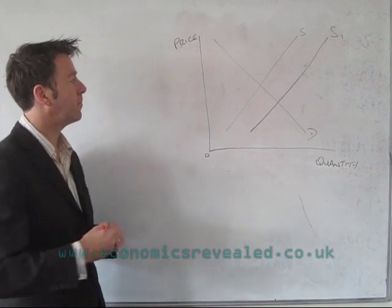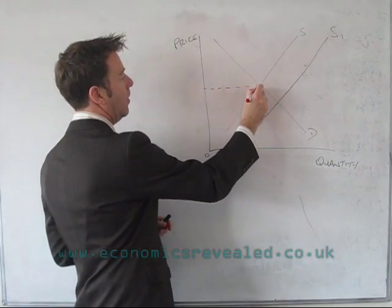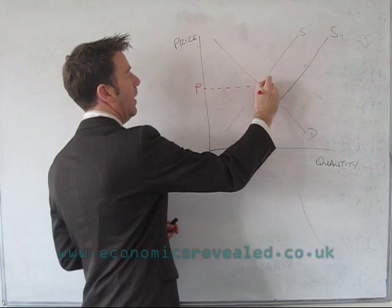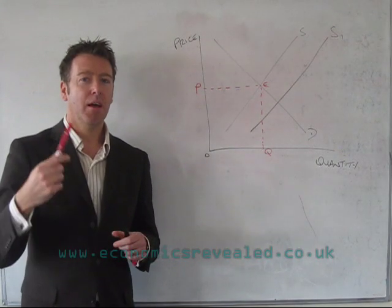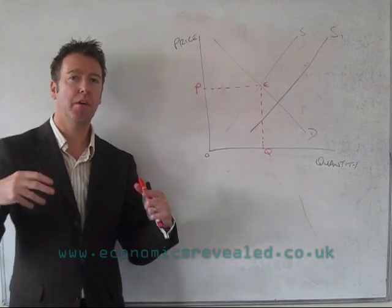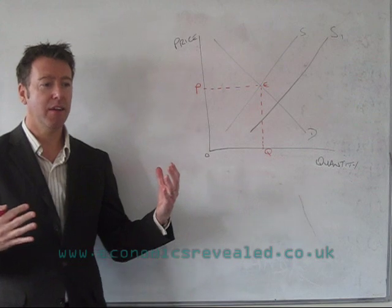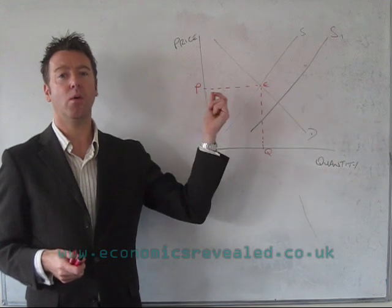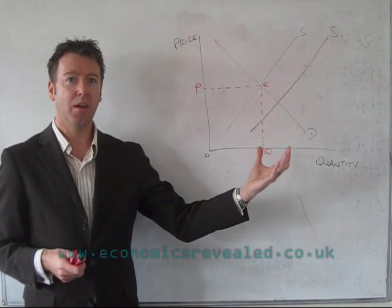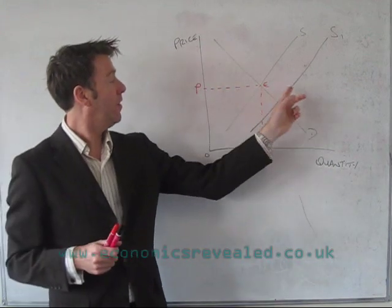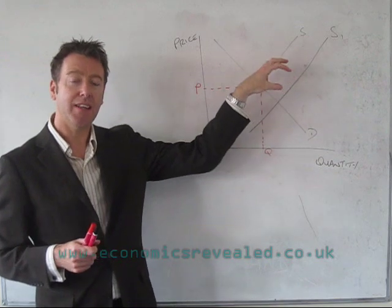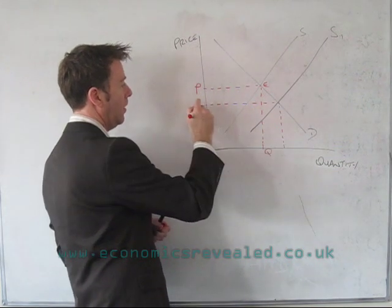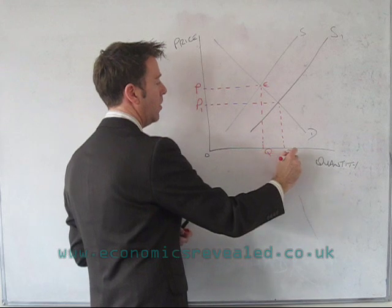So in that situation on this diagram, the original price was price P and quantity Q at equilibrium point E. But what's happened here is because you have improved productivity, the cost of raw materials has fallen, and you've got this new tractor, at every single price level you are now willing and able to produce more. The impact of that is you end up with an excess supply situation, and that tends to push the price down to a new equilibrium point P1 to Q1.